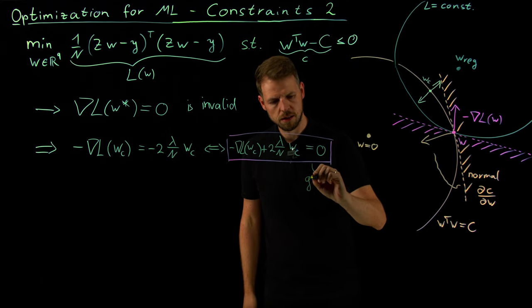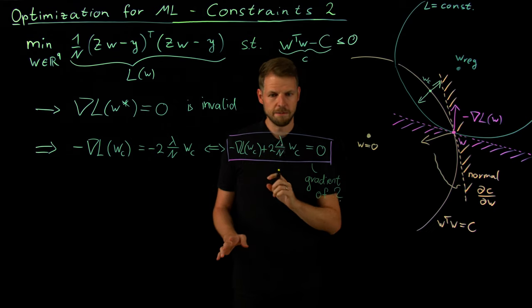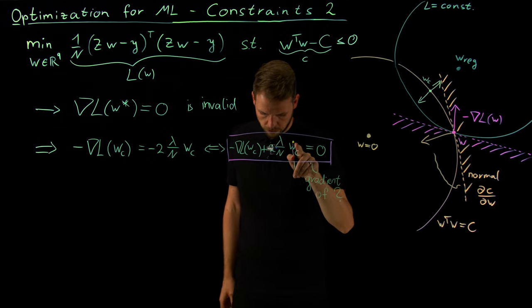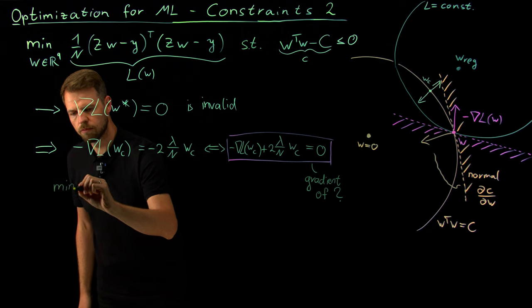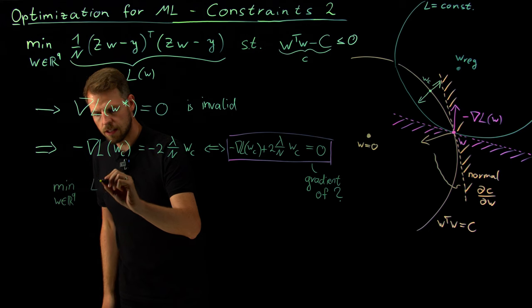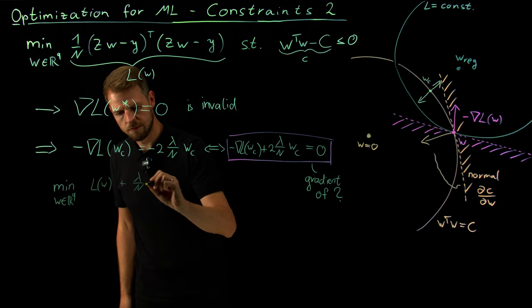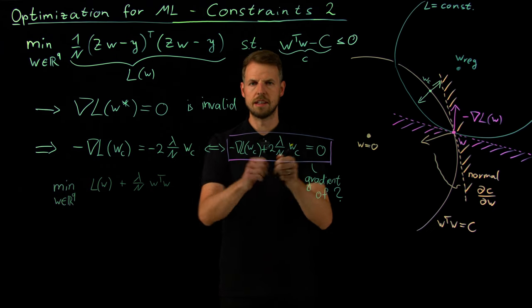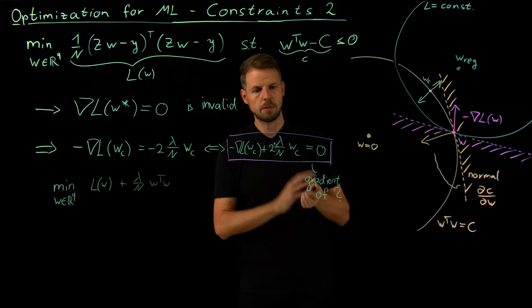And what we can ask ourselves now is, this looks like a gradient. And so maybe this one is also the gradient of something. So what I can ask is, is this the gradient of something? And of what? And now, well, you see this is a linear function. So taking the integral, we see that this will give us a square term. So interestingly, this will be the gradient for the following loss function. And I'm directly writing this as a minimization problem. w in ℝ^Q. And now this is my loss function L. L of w plus, and now I have lambda over n, w transpose w. So if I'm taking the derivative of this loss function, I get precisely this one. So what we see is we have a new loss function for which this is our optimality condition.